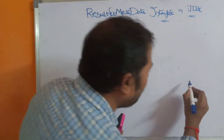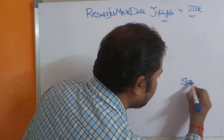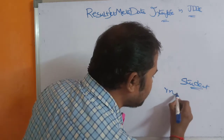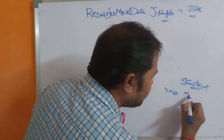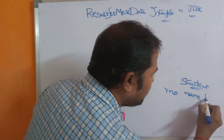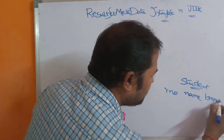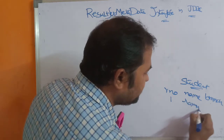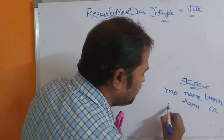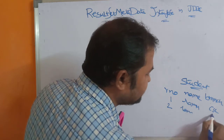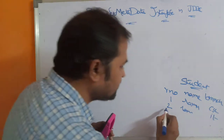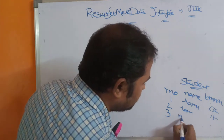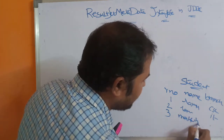Let us assume that we have a table. Let the name of the table be 'student'. The student table contains three columns: the first column is role number, the second column is name, and the third column is branch. For example, record one has role number 1, name Ramu, branch CSE. Record two has role number 2, name Ramesh, branch IT. Record three has role number 3, name Mahesh, branch EC.